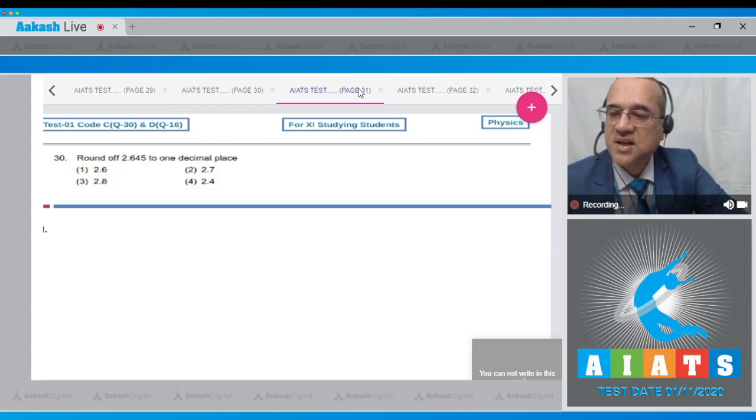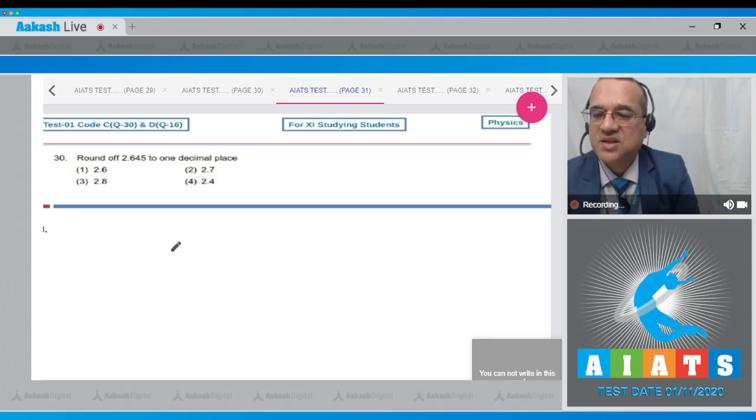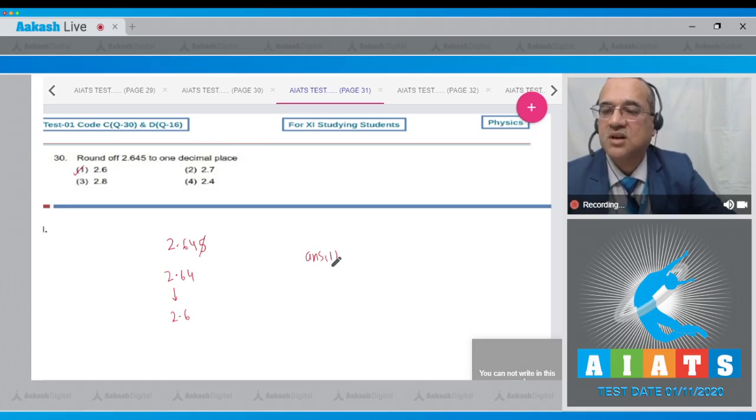Question number 30 says round off 2.645 to 1 decimal place. I mean after the decimal you have to keep only one digit. Now to reduce it to 2 decimals, the 5 will go, but this is even so this becomes 2.64. But you have to keep only 1, this is less than 5, so this reduces to 2.6. So the correct answer is option number 1.